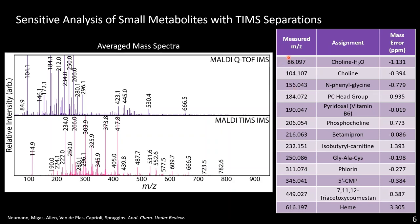What we can do is find a measured mass-to-charge ratio and determine what molecular formula has that m/z value. Using a series of database searching and tandem MS we can then assign each m/z value to a different small metabolite — such as choline, which is a lipid precursor, an altered amino acid, a vitamin, another lipid precursor, a tripeptide, and ending with heme. We have a very wide mass range, from 86 m/z — which is incredibly small — up to 600.